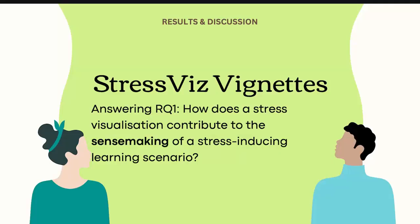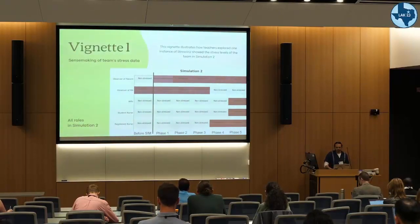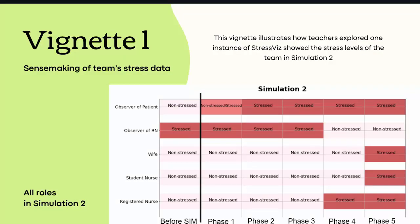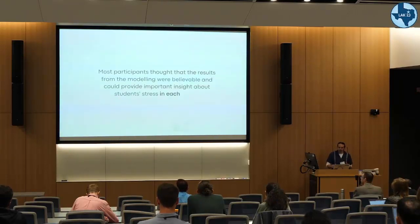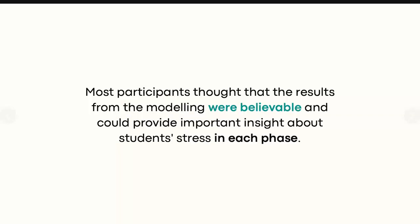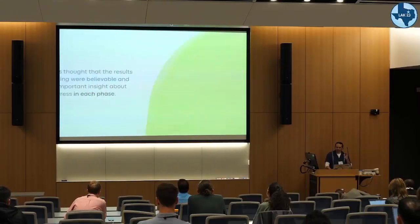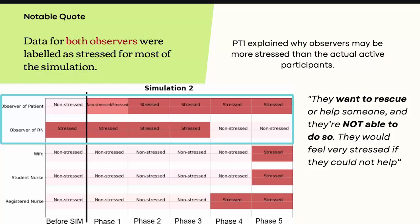For RQ1, we were trying to understand to what extent these visualizations support sense-making about stress-inducing learning scenarios. We used vignette analysis to illustrate how this was happening. In one example, a teacher looked at one group and could see different roles where students were reacting differently — even the observers were more stressed than the students directly receiving the aggression. This sparked interesting thoughts from teachers. In general, they said the modeling was believable and they could correlate it with their expectations, explaining, for example, how observers wanted to help but couldn't, which is why they became stressed.